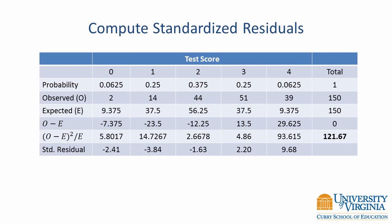We can compute the standardized residual for a score of 0 as negative 2.41. We obtain this value by taking negative 7.375 and dividing it by the square root of 9.375.